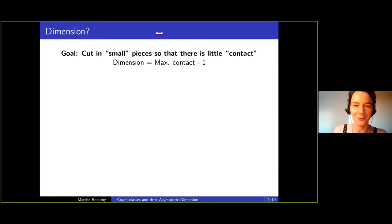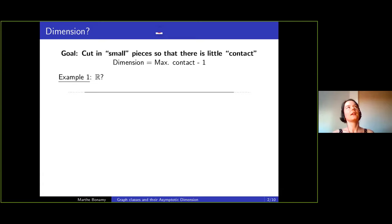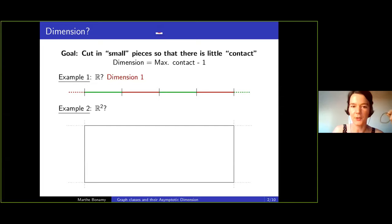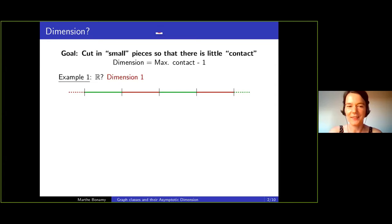Let's take a simple example. Let's look at the reals. You have the line of all reals and you wonder how can I cut this into small pieces so there is little contact? It's natural that you can't take the whole thing as one piece. One natural thing to do is have alternating intervals of arbitrary but small length. This way you can make everything as small as you like, and around every vertex the most different pieces you can see is two. So you'd have dimension exactly one. It's not hard to convince yourself this does not have dimension zero.